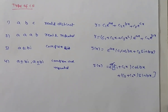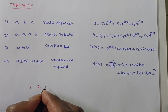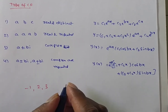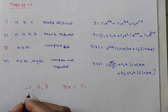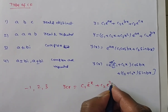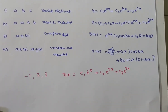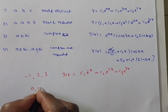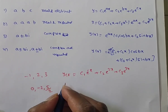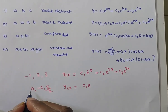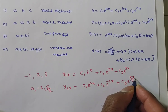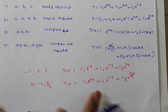For example, if the roots are -1, 2, 3 (real and distinct), the complementary function is CF = c₁e⁻ˣ + c₂e²ˣ + c₃e³ˣ. Another example: if roots are 0, -2, 5/2, then CF = c₁e⁰ˣ + c₂e⁻²ˣ + c₃e^(5x/2).